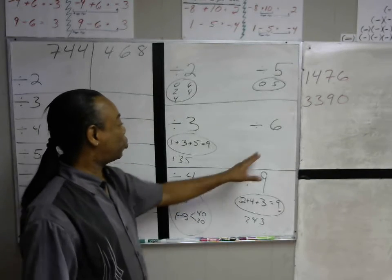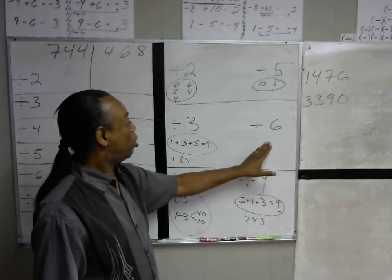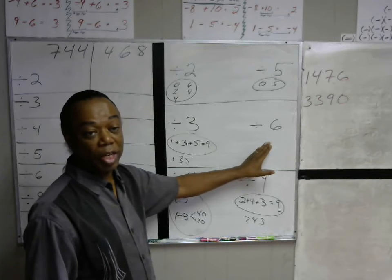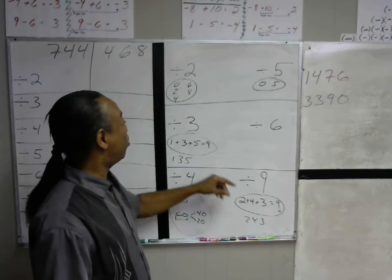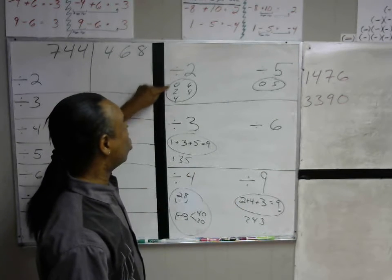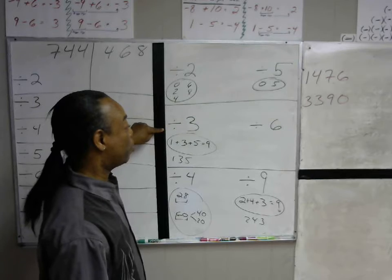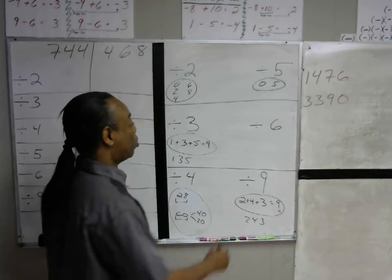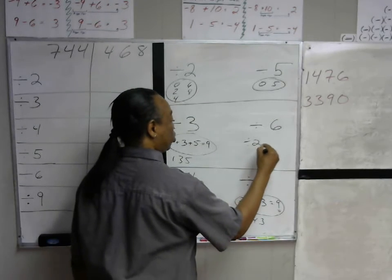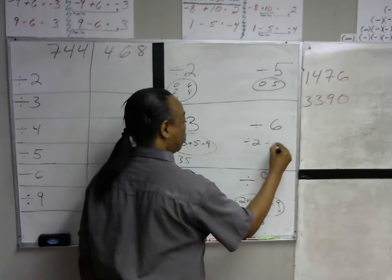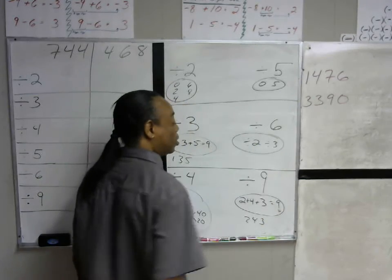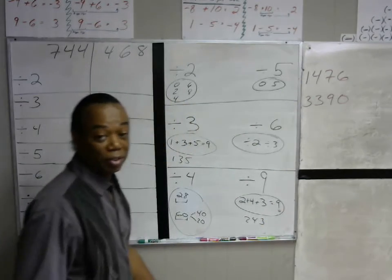The last rule: to be divisible by 6, the number simply has to be divisible by both 2 and 3. So if it's divisible by 2 and it's divisible by 3, it's divisible by 6.